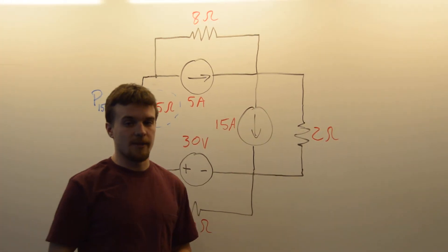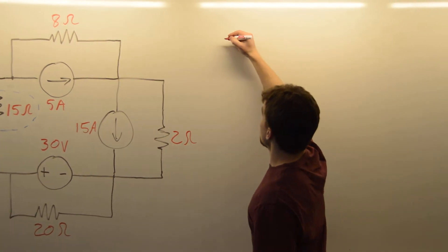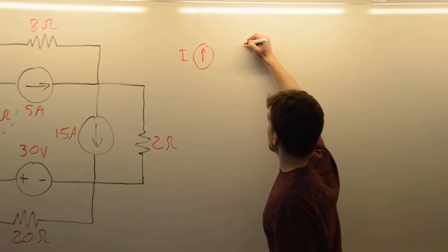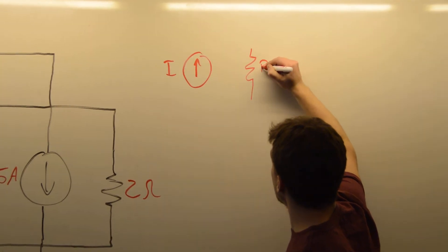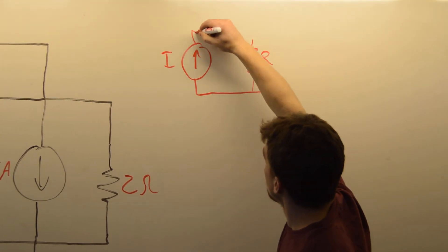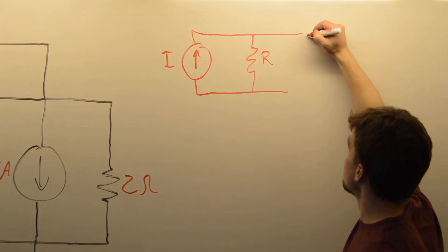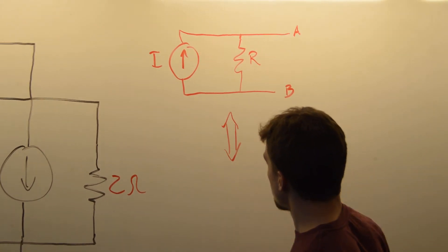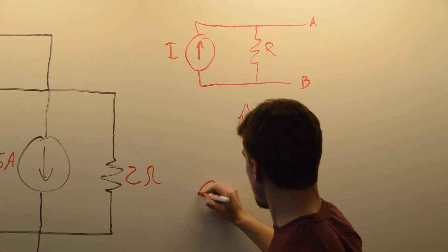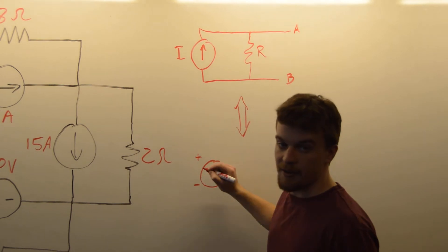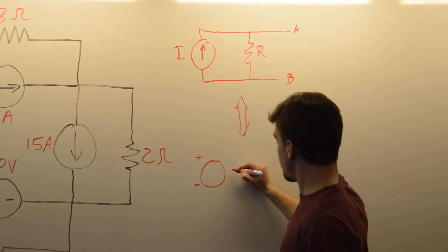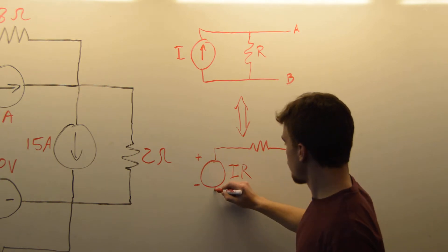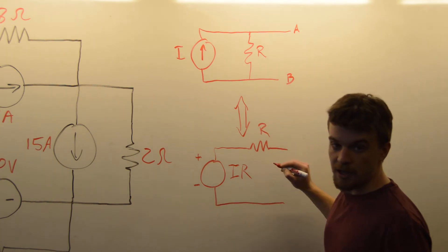The idea of source transformations is that if you have a current source — we'll call this I — in parallel with a resistor R, in between points A and B in any circuit, that is equivalent to a voltage source with a value I times R, in series with a resistor value R, in between the same two points.